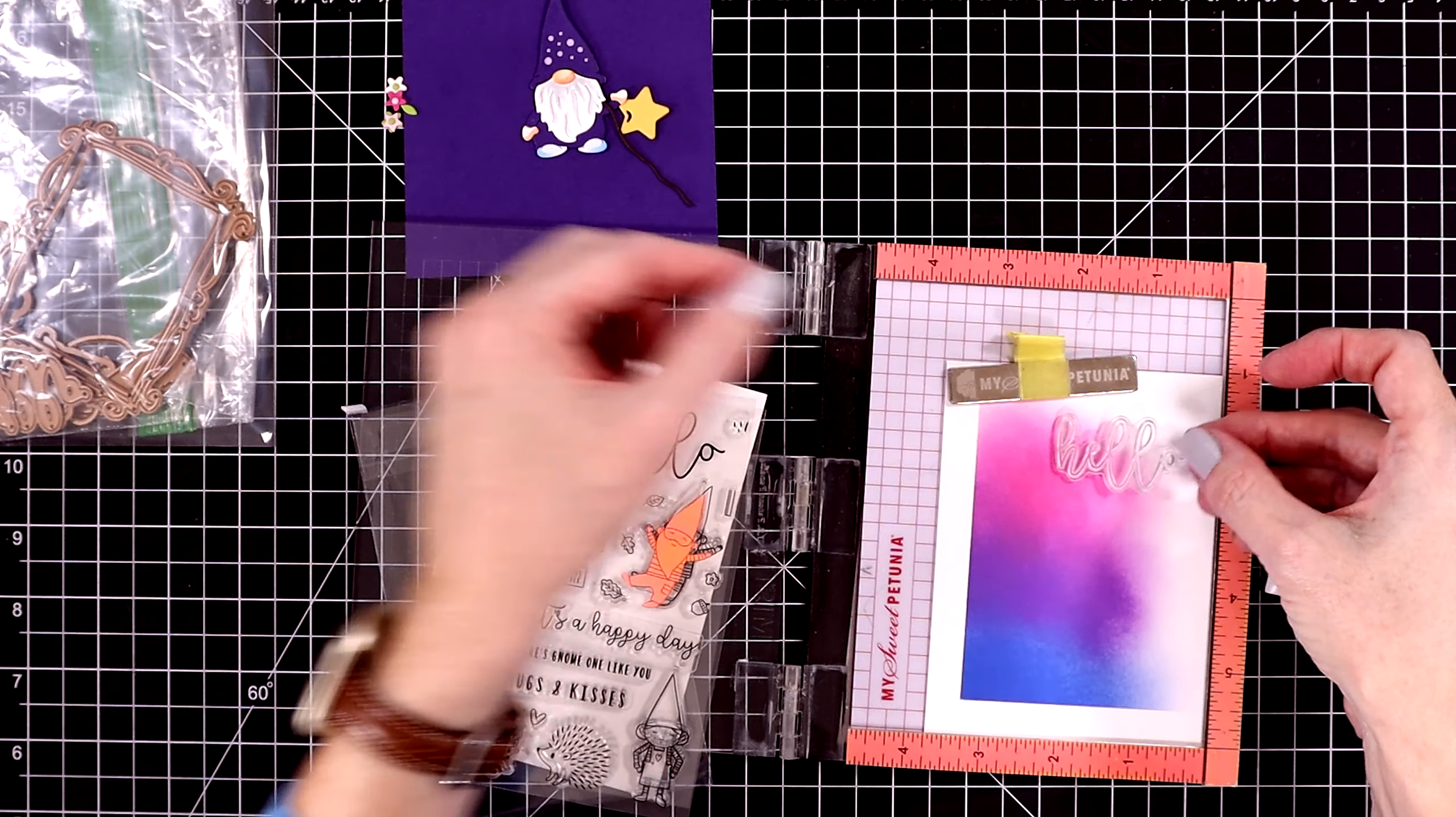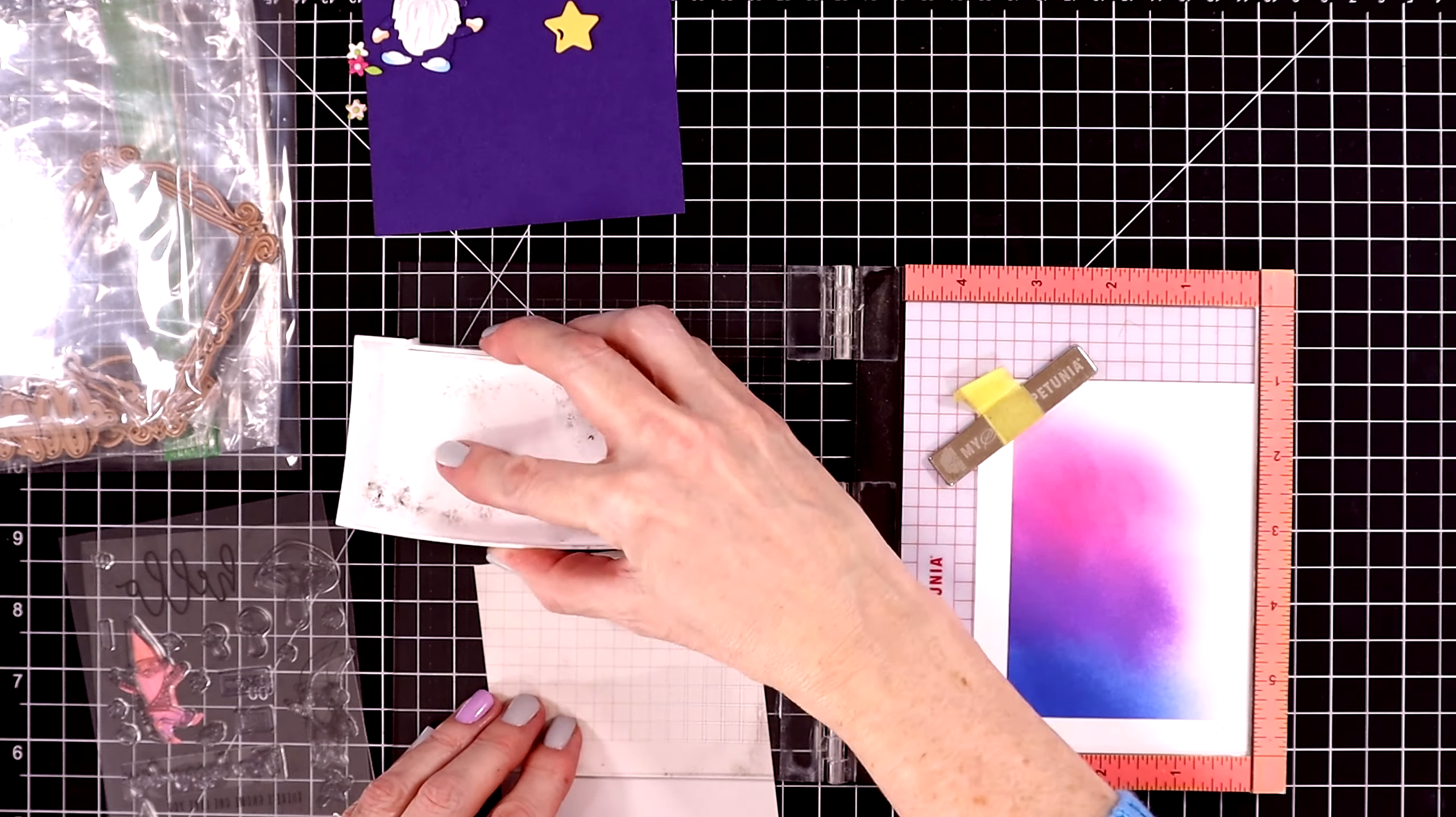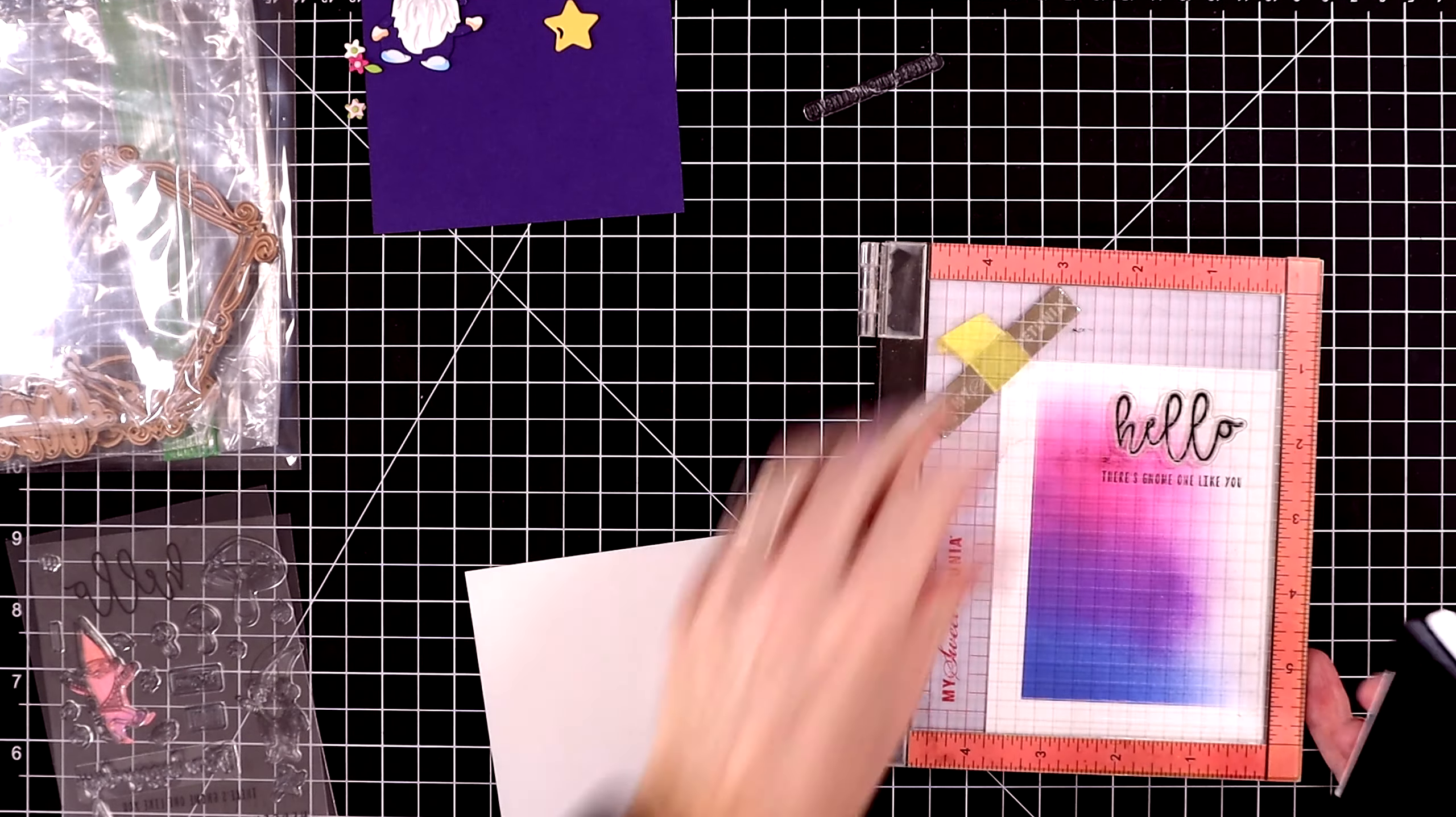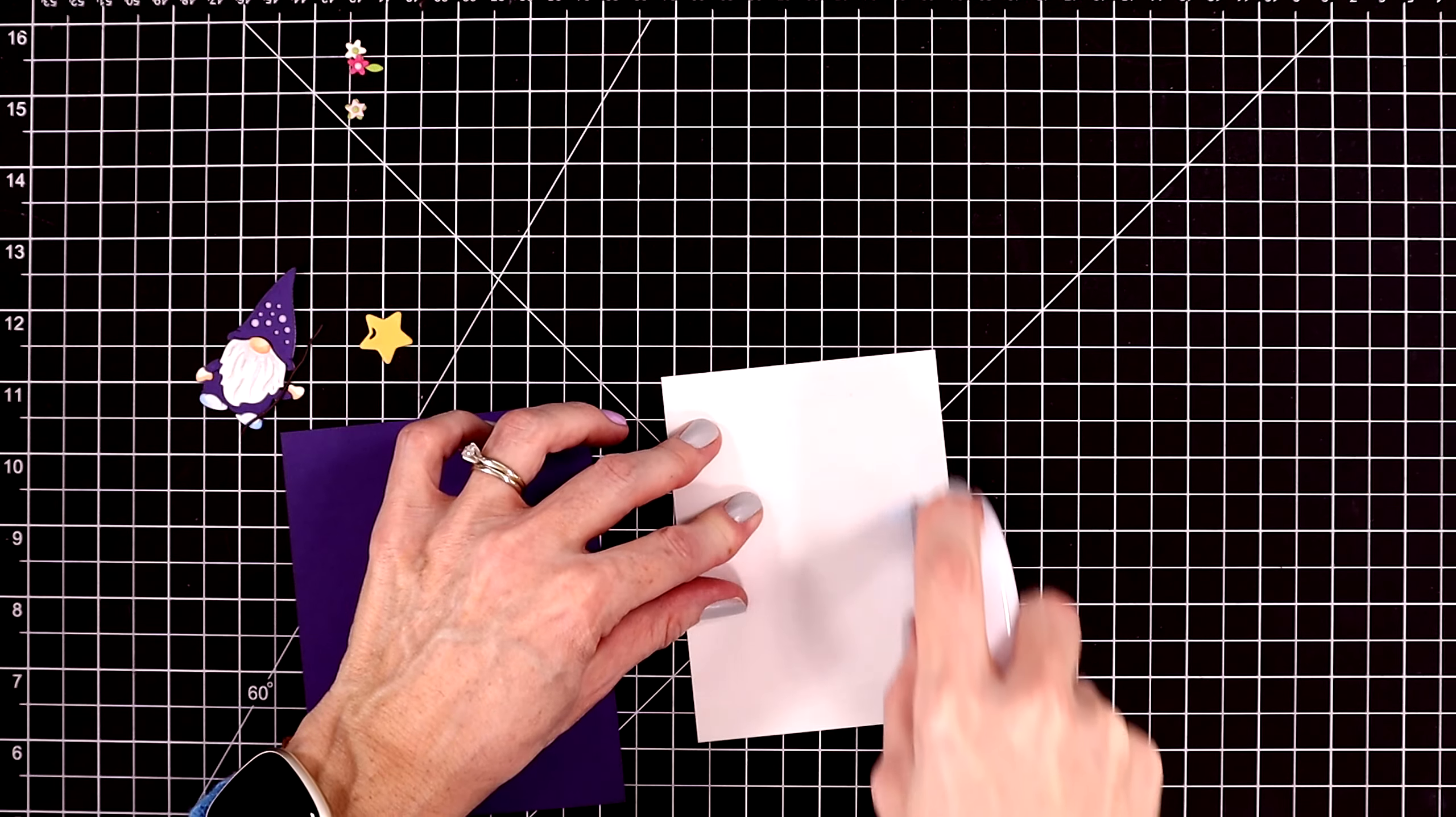All right, so here's our panel all ready to go. I'm pulling out an older stamp set. This came from one of the card kits of the month about two years ago, and I'm going to use the sentiment that says 'hello.' The strip sentiment beneath it says 'there's gnome one like you,' and I stamped that out with some Versafine Onyx Black ink.